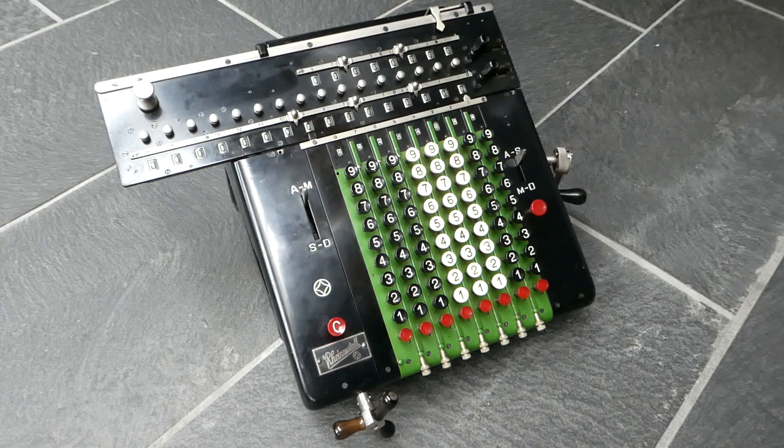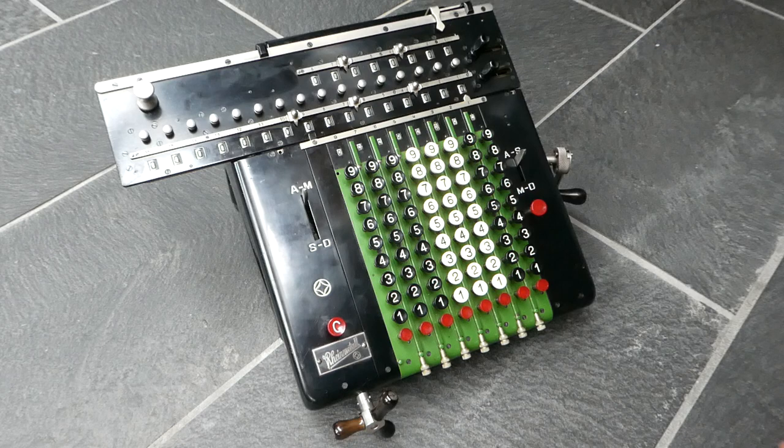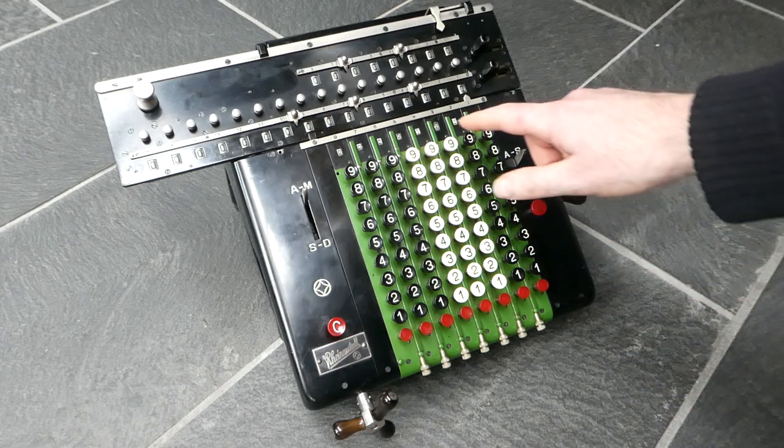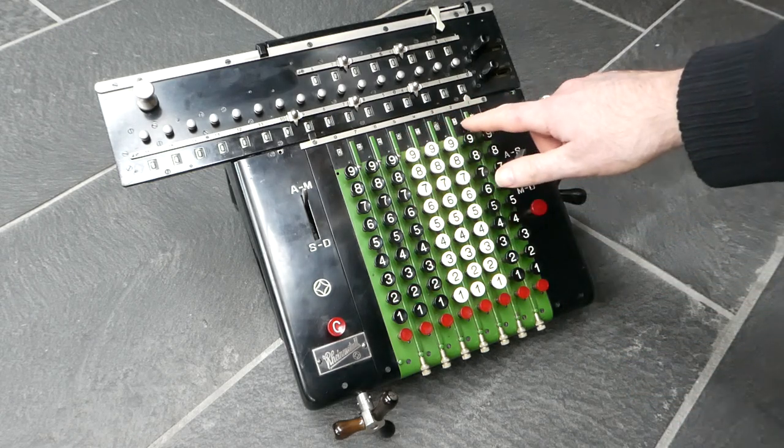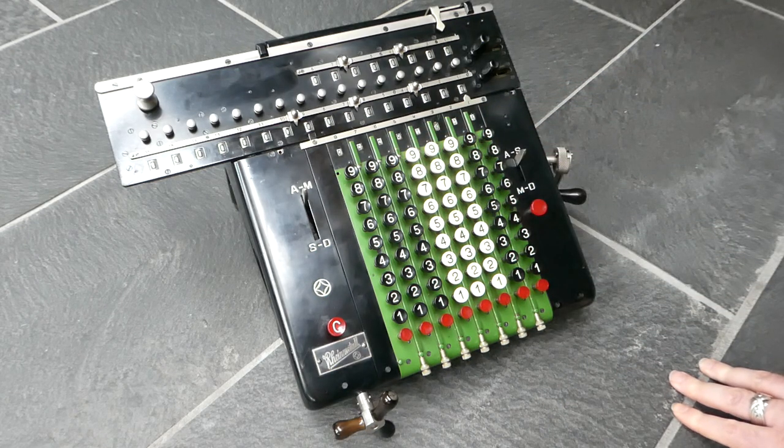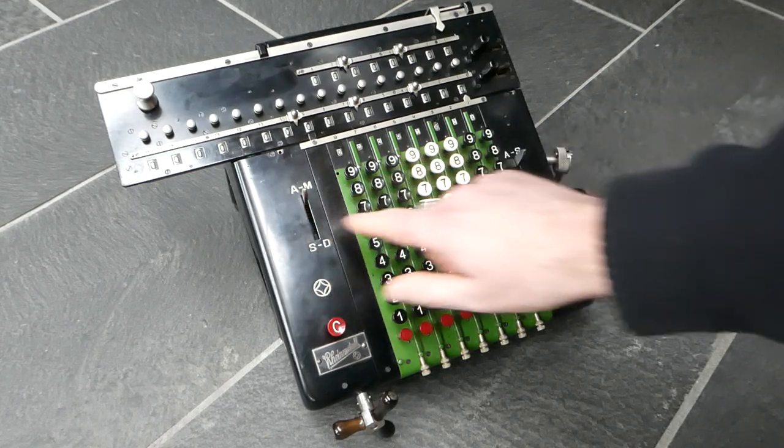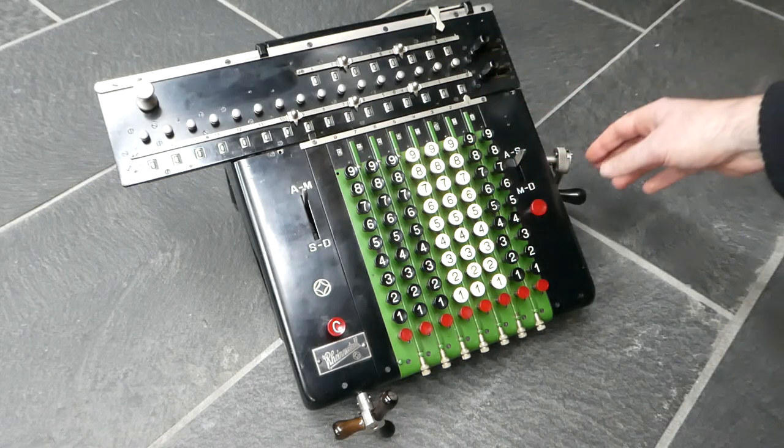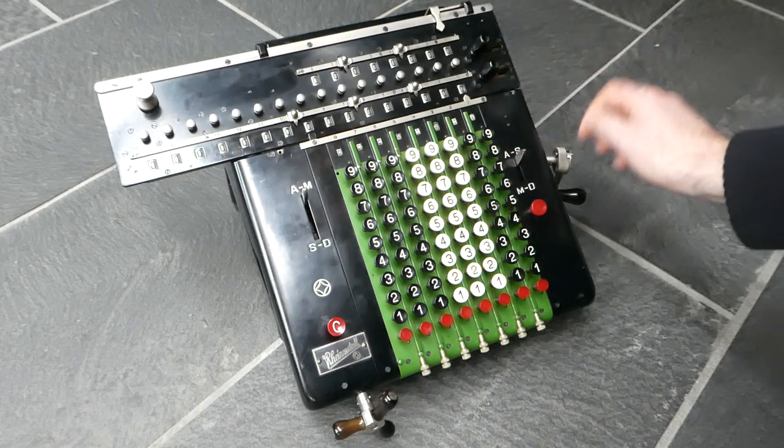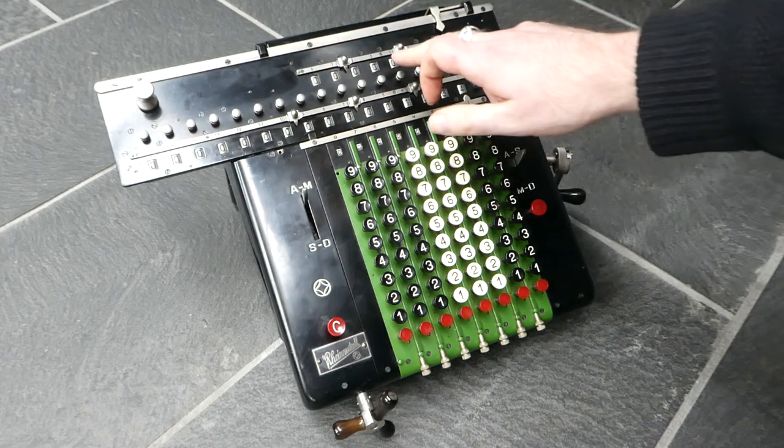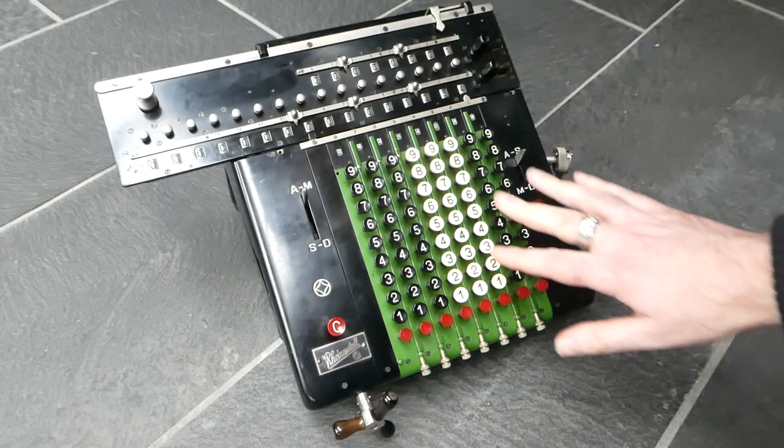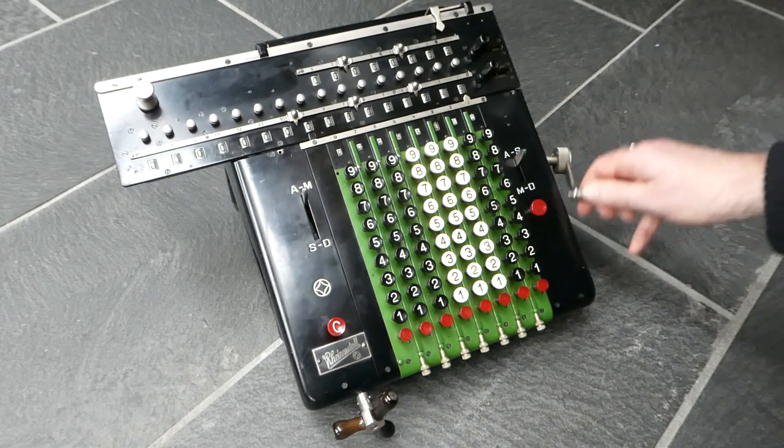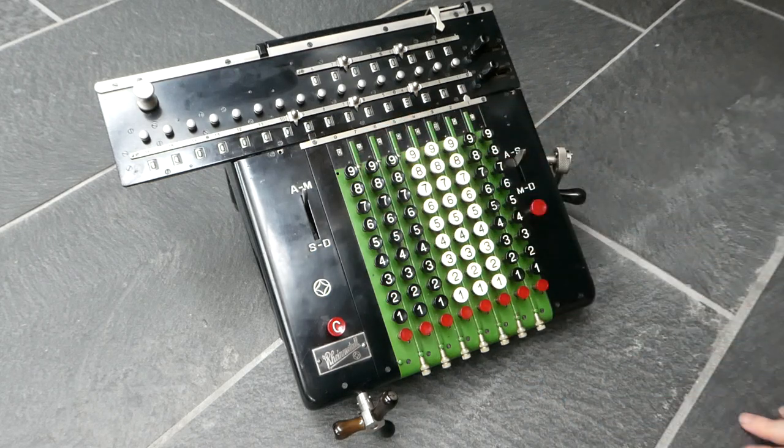The basic functions are very straightforward. You can type in a number. The input that you've entered can be read back here on this input register. I have it on addition now. The register and counter is clear, so if you now turn the crank the input gets added to the register. The counter is incremented by one, and the keyboard is cleared automatically for the next input.